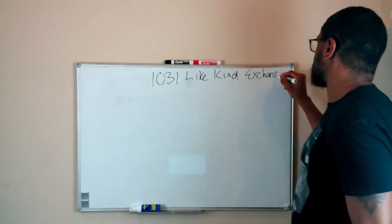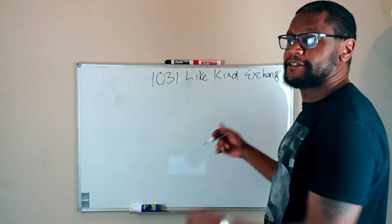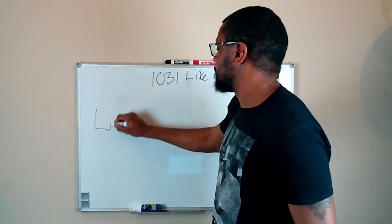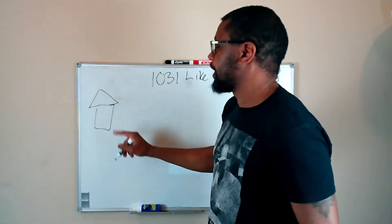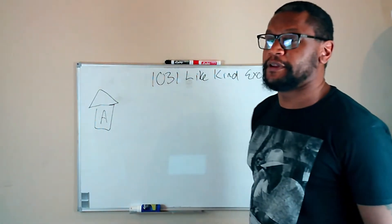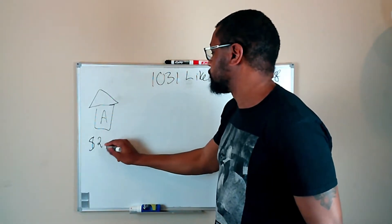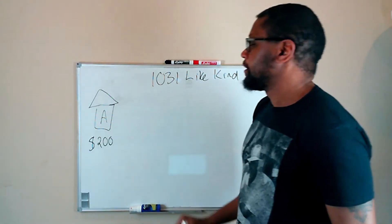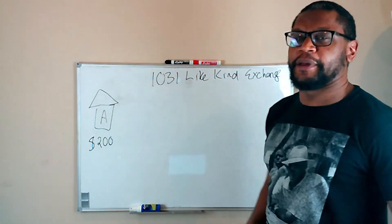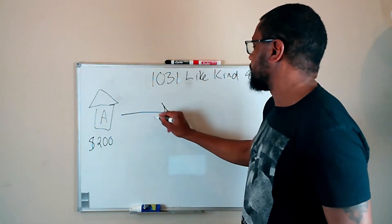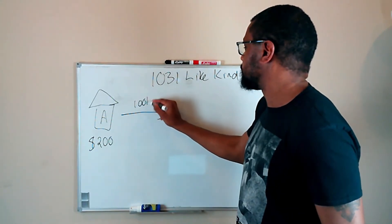My handwriting is terrible. But we're going to talk about the 1031 like kind of exchange. Essentially how it works is, let's say I own rental property A. I've owned this property for five years and I sell this property for $200,000. On the sale of this property, I have to pay off the mortgage companies and everybody. I make a profit of $100,000.